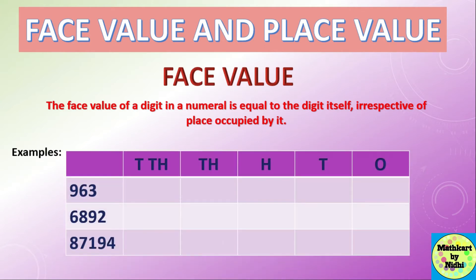In 963, the face value of 3 is 3, the face value of 6 is 6, and the face value of 9 is 9, irrespective of the place occupied by these digits. In simple words, we can say that face value is the value of how the digit looks.